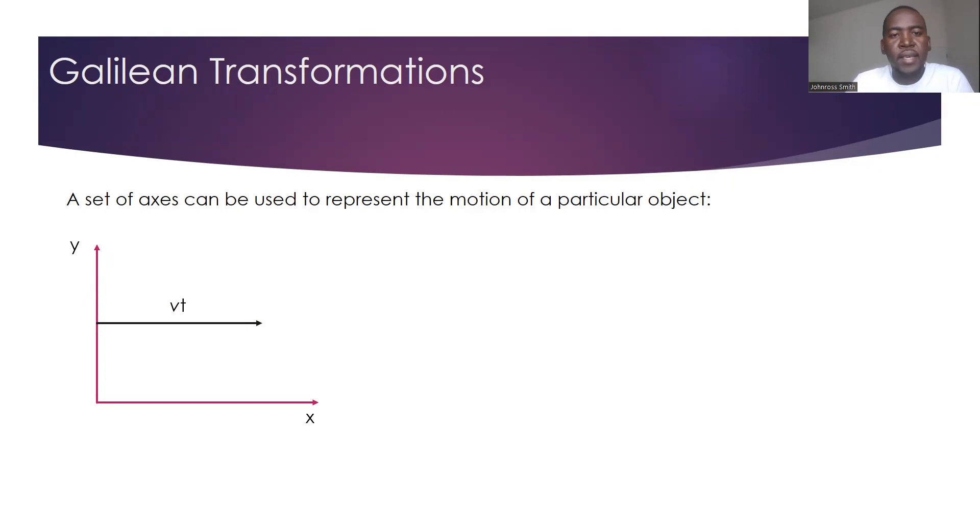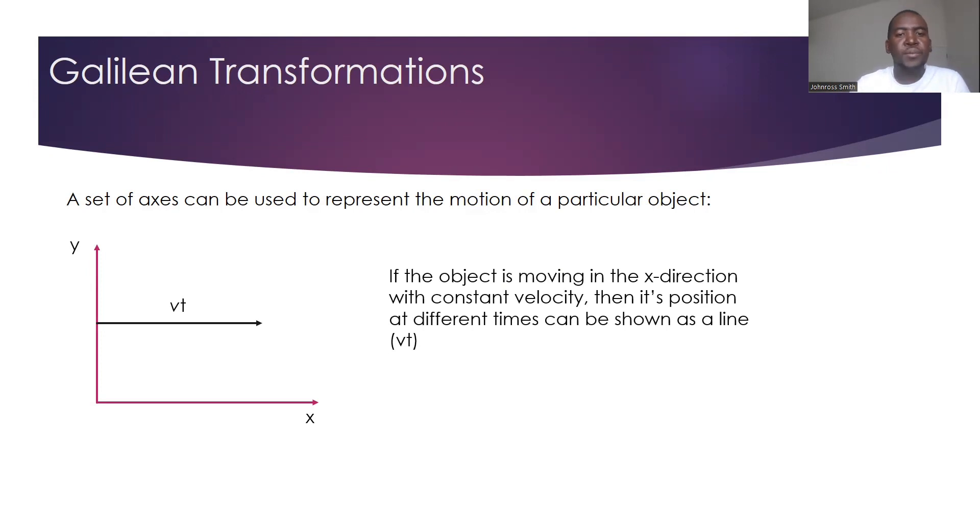A straight-up axis can be used to represent the motion of particular objects. In this case, this object is moving in the x-plane. So the arrow represents going to the right in our x-plane. If it's moving at a constant velocity, then its position at different times can be shown by the line vt.